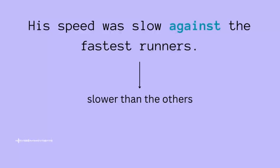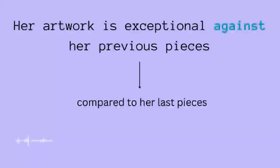Another example: 'his speed was slow against the fastest runners' — we are comparing his speed to the other runners. Instead of saying 'compared to the fastest runners,' we use 'against.' Another example: 'her artwork is exceptional against her previous pieces' — comparing this year's effort to last year's, using 'against' instead of 'compared to her previous pieces.'